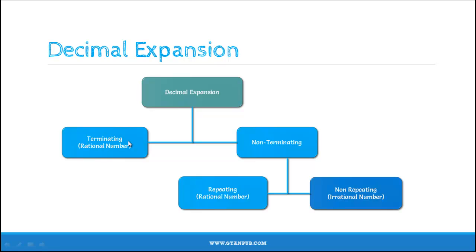A number which has a terminating decimal expansion is a rational number. When coming to non-terminating decimal expansion, there are again two types: non-terminating repeating decimal expansion and non-terminating non-repeating decimal expansion. When a number has non-terminating repeating decimal expansion, it is a rational number. And when a number has non-terminating non-repeating decimal expansion, then it is an irrational number.